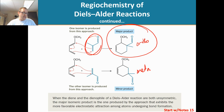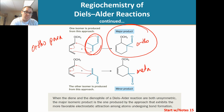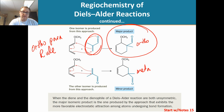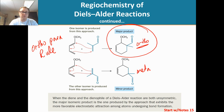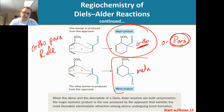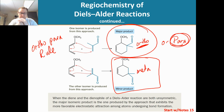There is a rule that helps us figure out the regiochemistry, and it's called the ortho-para rule. The ortho-para rule states that when you have a Diels-Alder reaction, the major product is always going to be ortho or para. The meta is rarely, if ever, going to be the major product. So if it's ortho or para, that's the major product you're going to get.